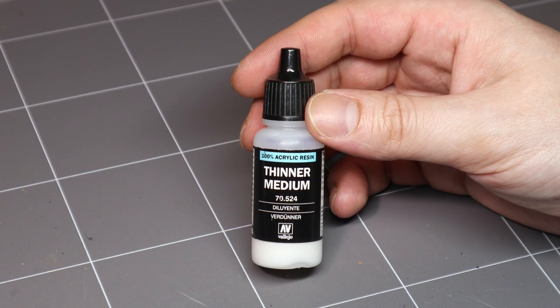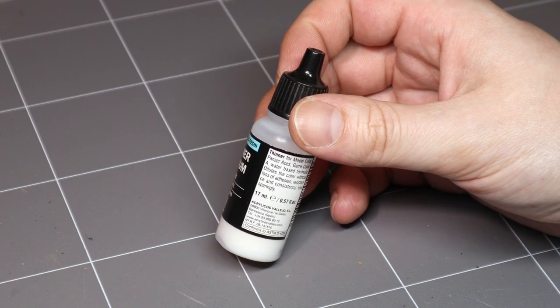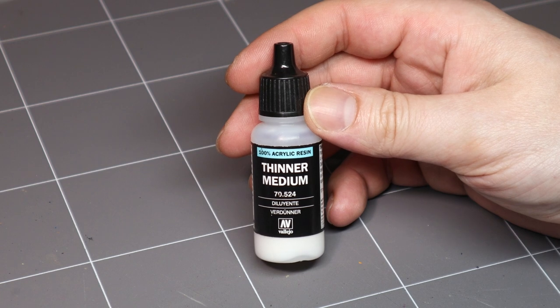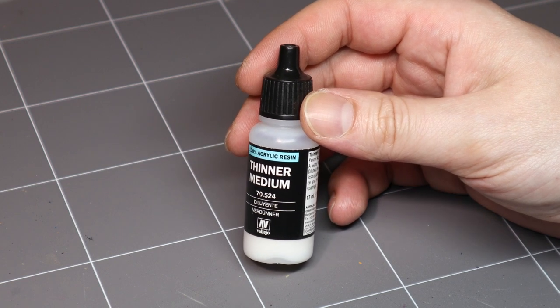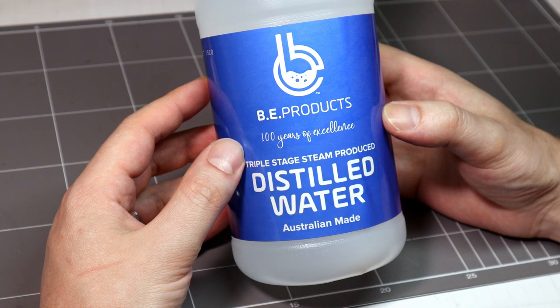When I discover a paint on the thick side I add two things in equal parts. The first is thinner medium, any brand is fine as long as it's for acrylic paint. The second thing is good old-fashioned water.